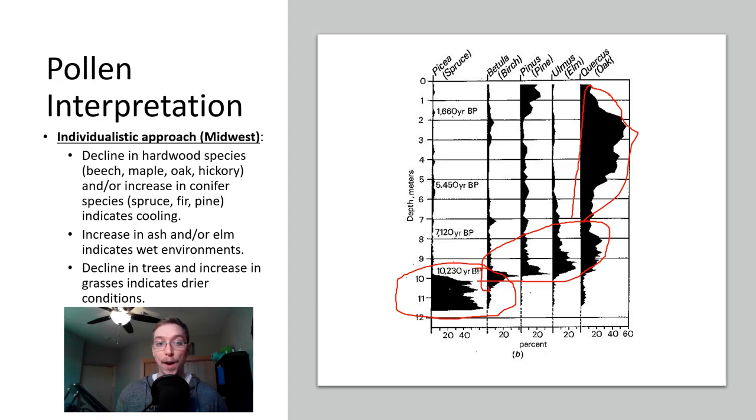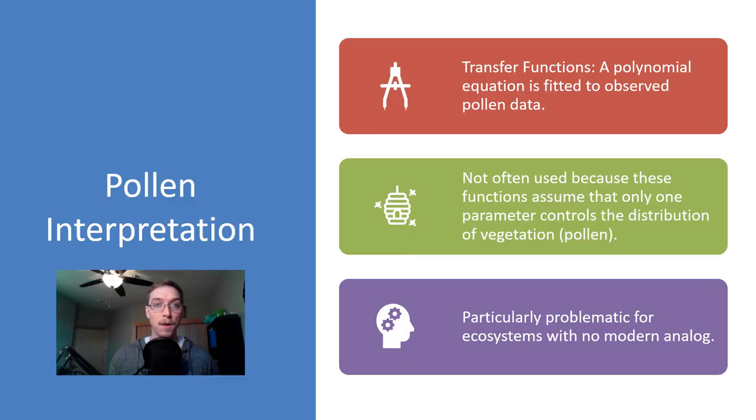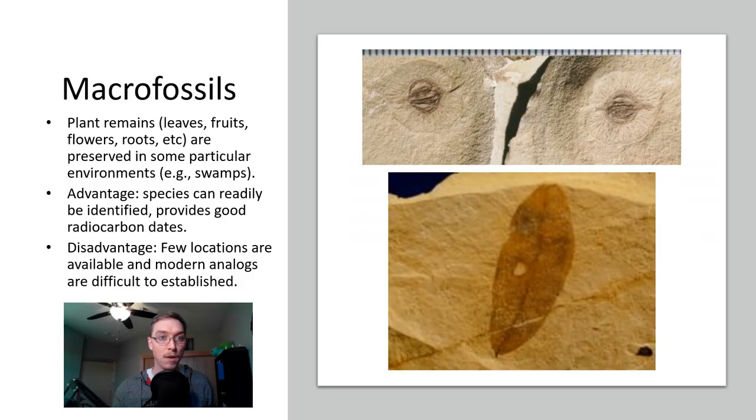Pollen interpretation: you have transfer functions. So a polynomial equation is fitted to observe the pollen data. It's not often used because these functions assume that only one parameter controls the distribution of vegetation pollen and this is particularly problematic for ecosystems with no modern analogues. We look at things like macrofossils, so plant remains, leaves, fruits, flowers, roots, etc. are preserved in some particular environments like swamps. An advantage of this is species can readily be identified providing good radiocarbon dates. A disadvantage: few locations are available and modern analogues are pretty difficult to establish.